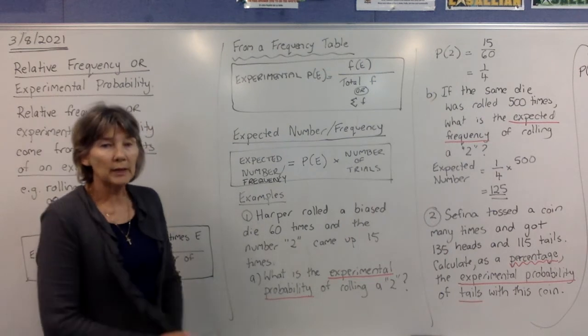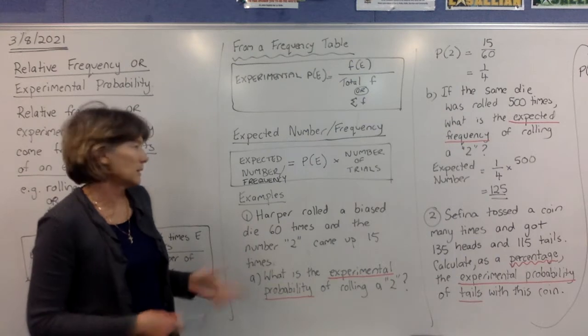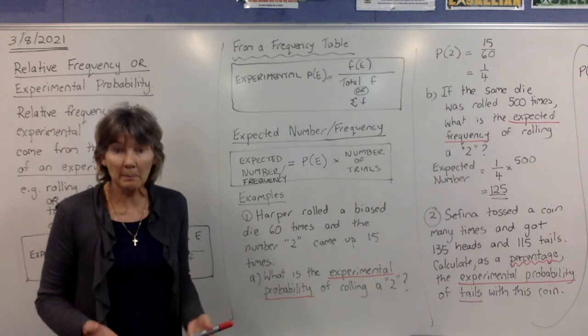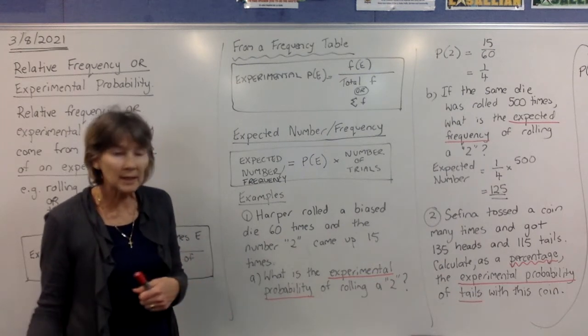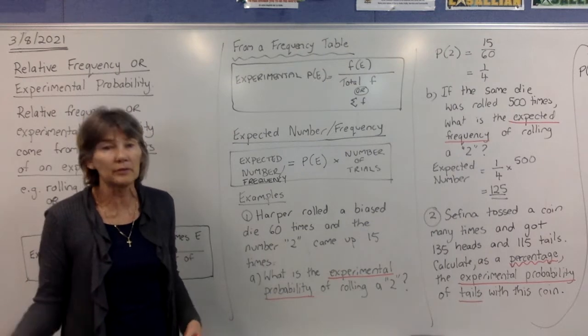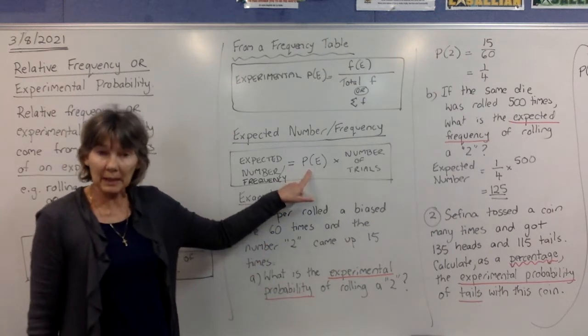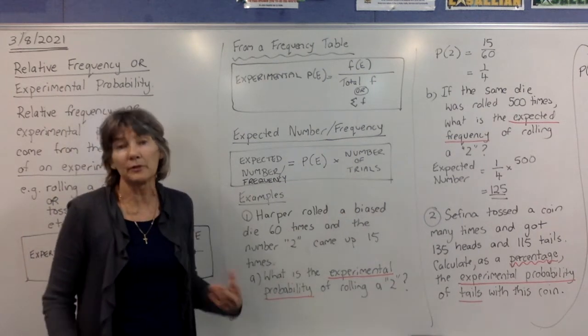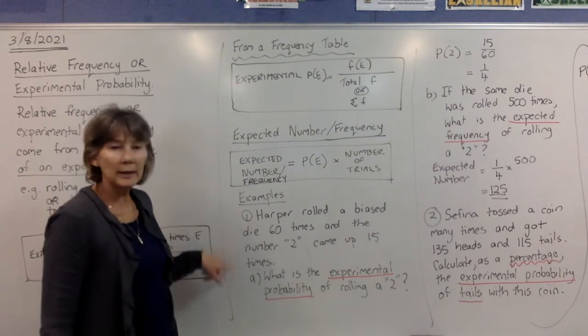The one other thing you need to know here for some of these questions is expected number or expected frequency. So to find the expected number, that's the number that you would expect to get, number of twos or number of sixes or number of heads or number of tails that you expect to get, you get the probability times by the number of trials, the number of times you're going to throw the dice or toss the coin or whatever. So if you look at examples here.